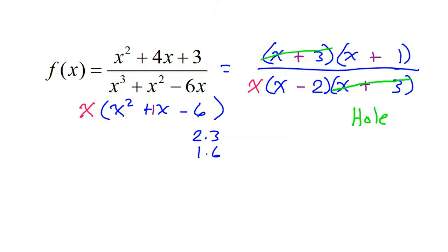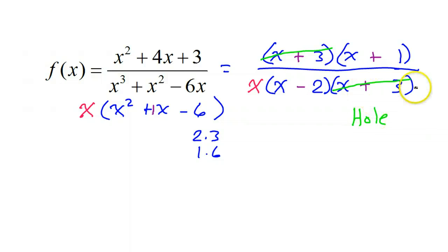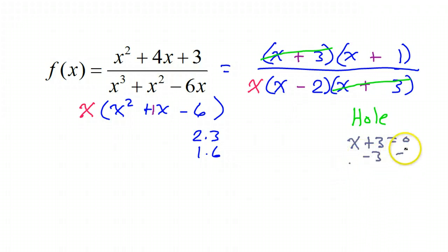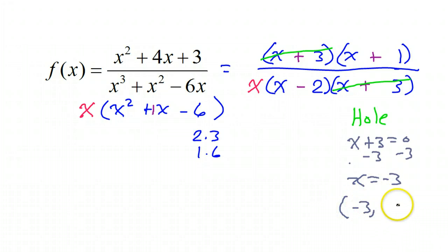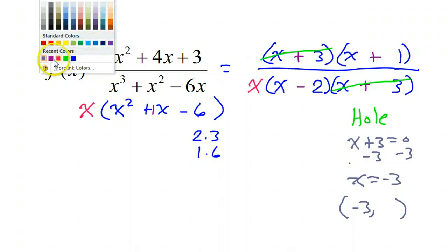There will be a hole. If I set x plus three equal to zero, subtracting three from both sides gives me x equals negative three. So there's going to be a hole at negative three comma something. Now, if I want to know what the y value is, I need to look at the rest of the function.